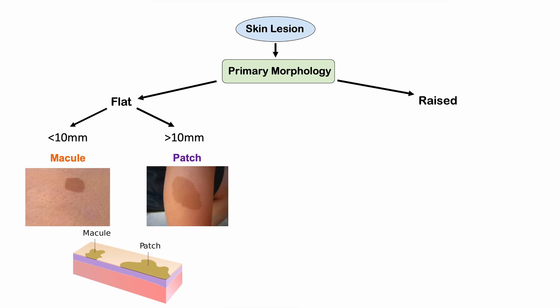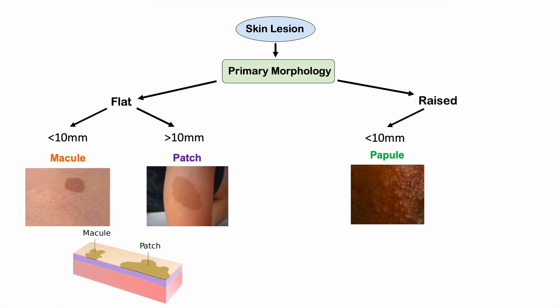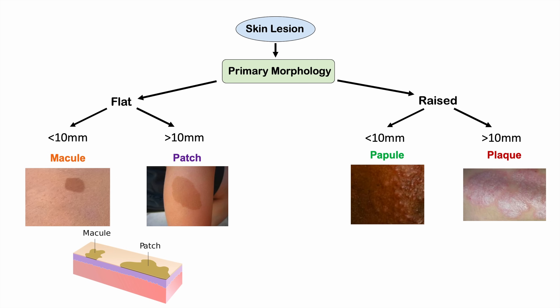Moving on to the raised category, we again use the 10 millimeter cutoff. A raised lesion less than 10 millimeters is a papule. If it's raised and greater than 10 millimeters, we call that a plaque. So the primary morphology breaks down into flat and raised, then less than and greater than 10 millimeters, giving us macules, patches, papules, and plaques.